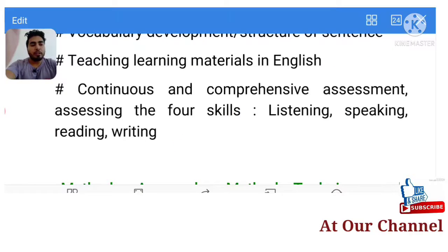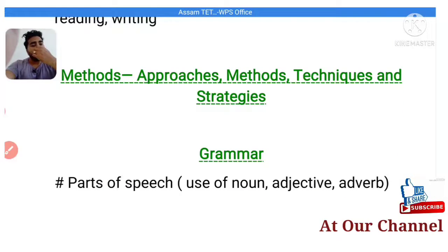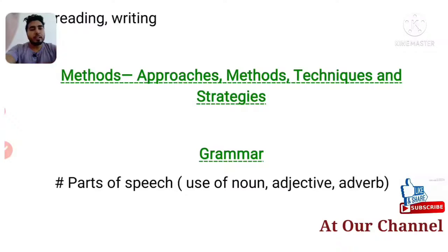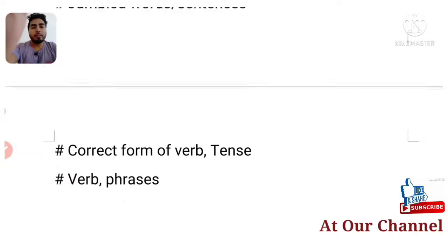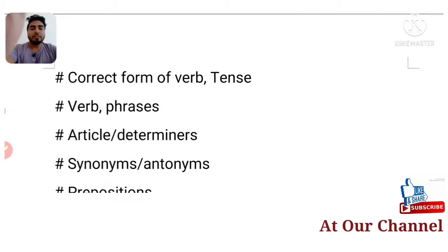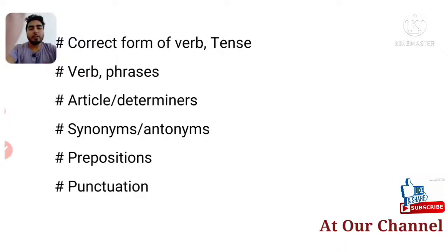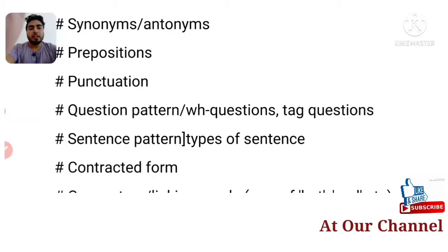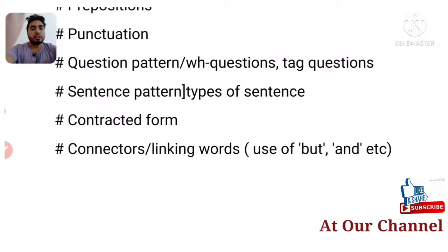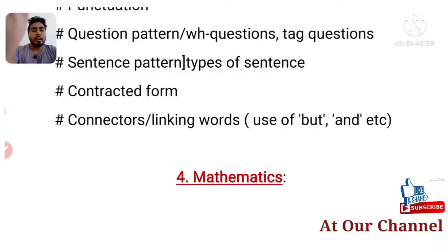Next, methods, approaches, techniques and strategies. Then the grammar section — most important for English as a compulsory language: parts of speech, use of noun, adjective and adverb, jumbled words or sentences, correct form of verb and tense, phrases, articles, determiners, synonyms and antonyms, prepositions, punctuation, question patterns, tag questions, sentence patterns, types of sentences, contracted forms, connectors, and linking words.